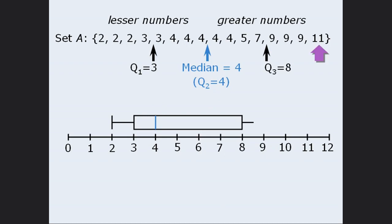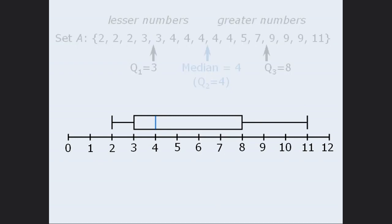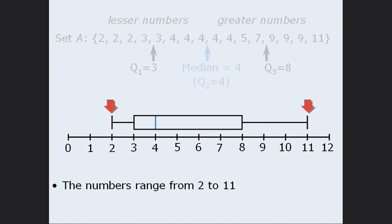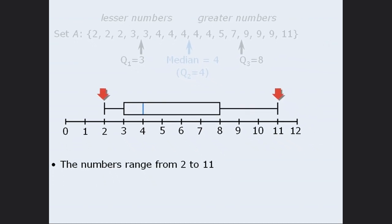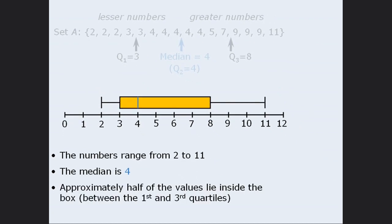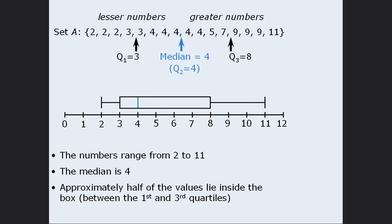Finally, the biggest number in the set is 11, so the whisker part of our box plot extends all the way to 11. Now that we've represented set A with a box plot, we can ignore the set and get some key information from this graphic. We can see that the numbers range from 2 to 11, the median is 4, and about half of the numbers lie inside the box — in other words, about half of the numbers are between 3 and 8. Box plots are a convenient way to visually represent a set of numbers.